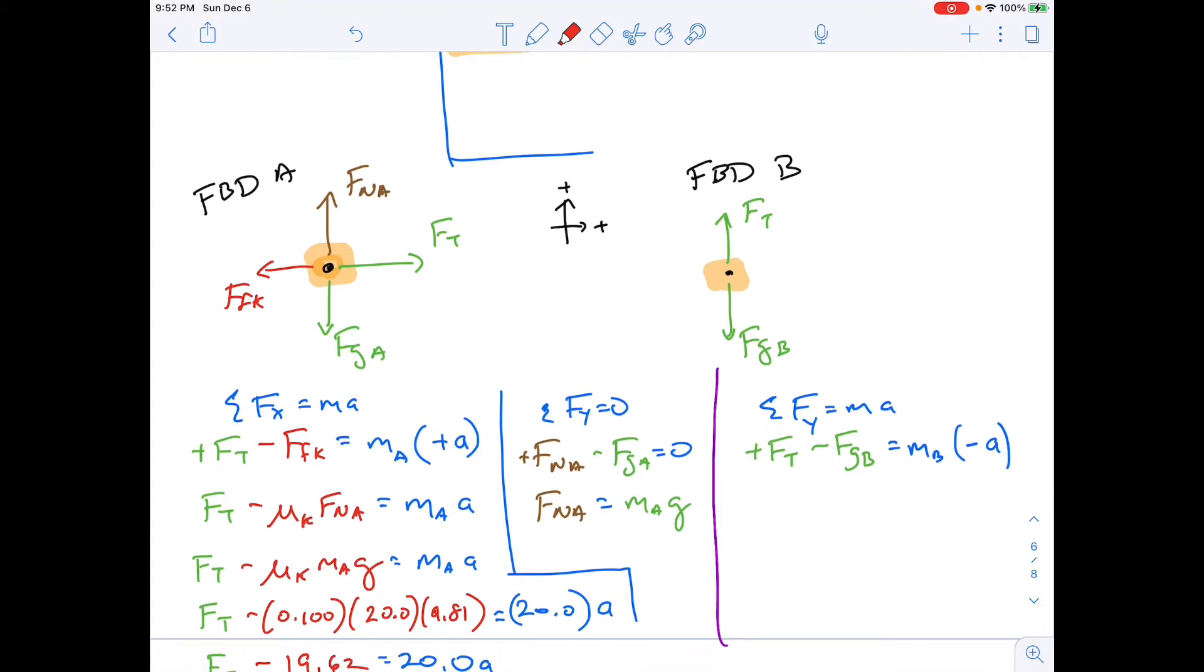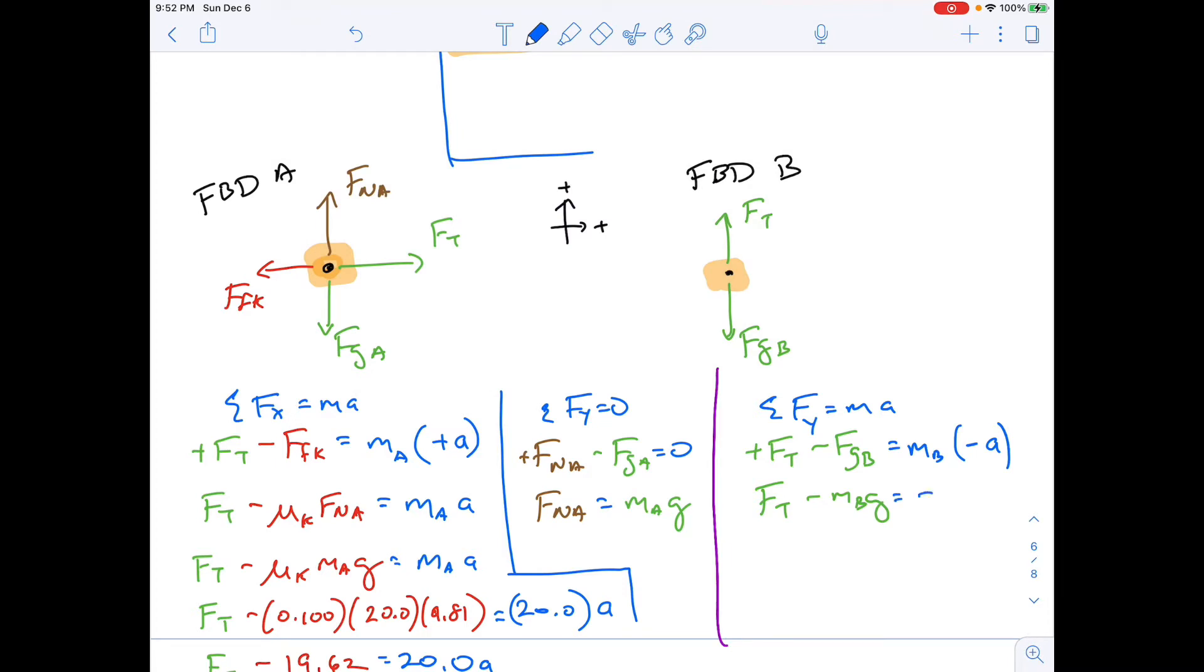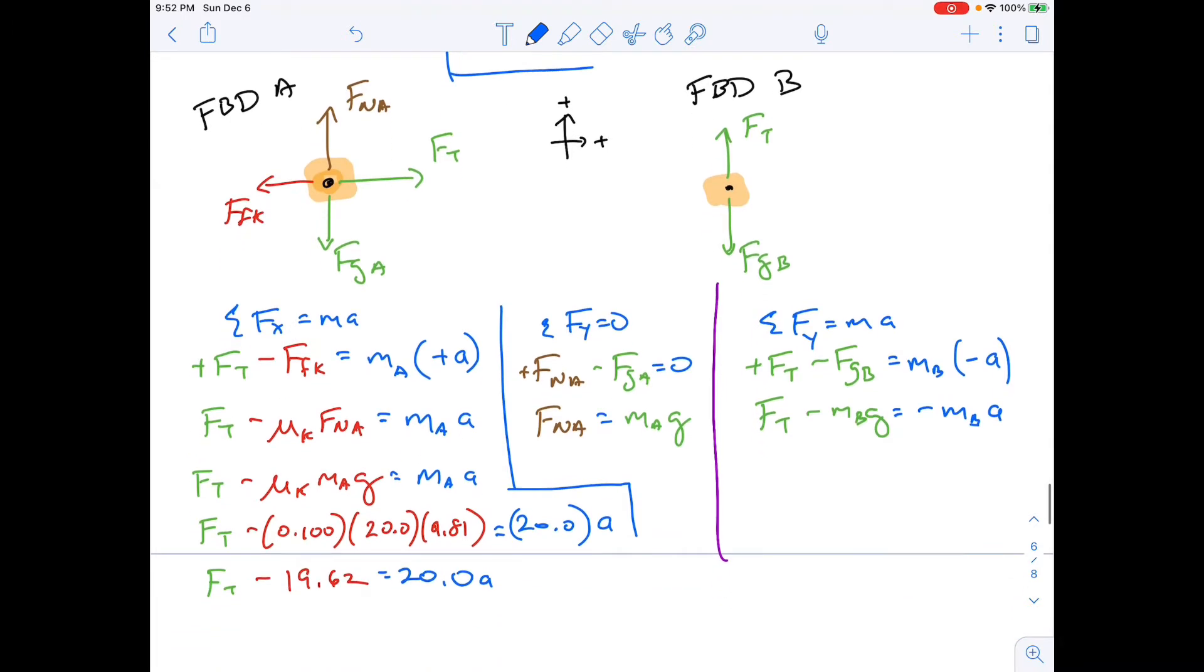Same thing over here. So keep that in mind. Way important. Now, again, we don't know FT. This is MBG equals negative MBA. So I just take that negative and put it over there and distributed it.